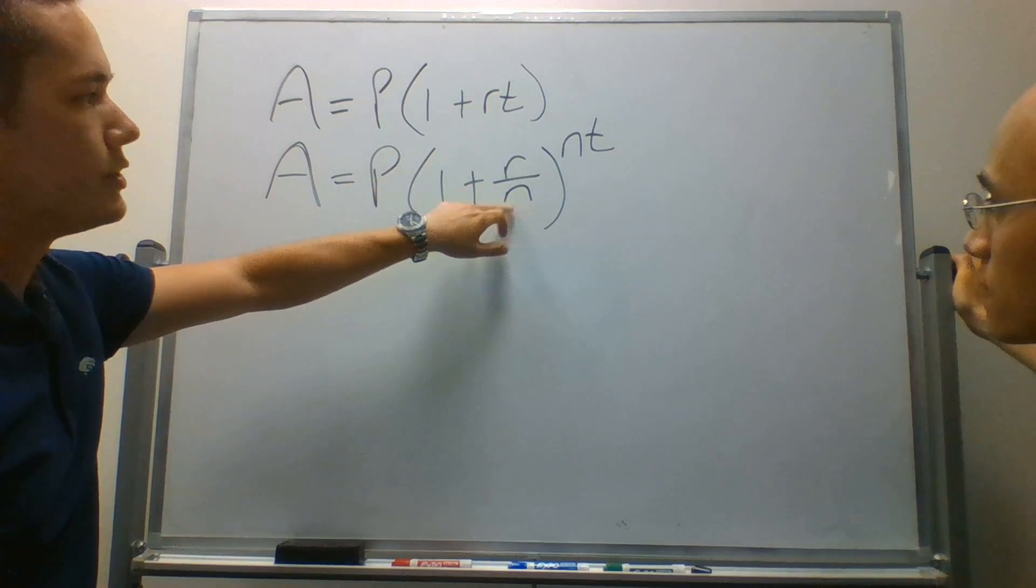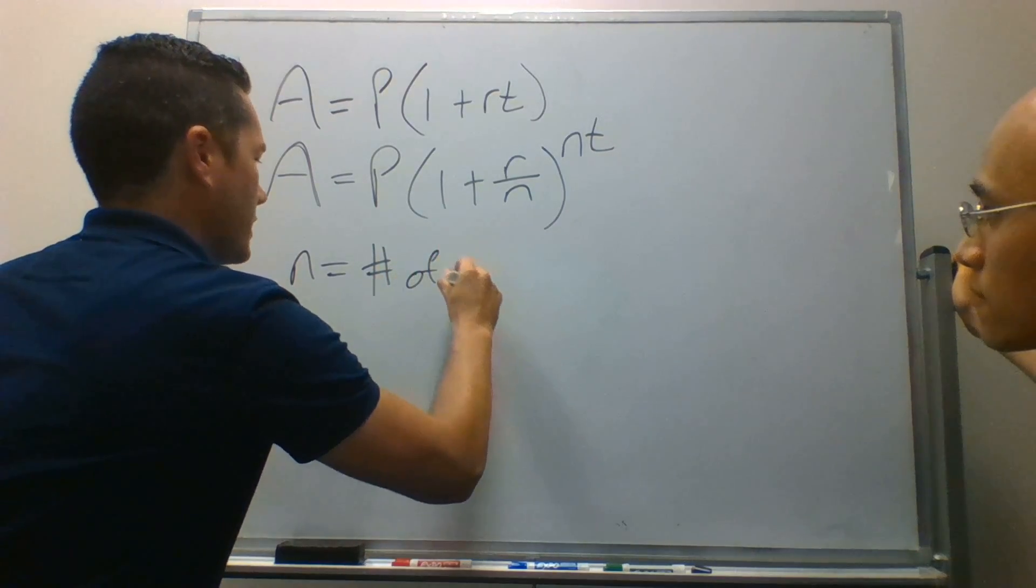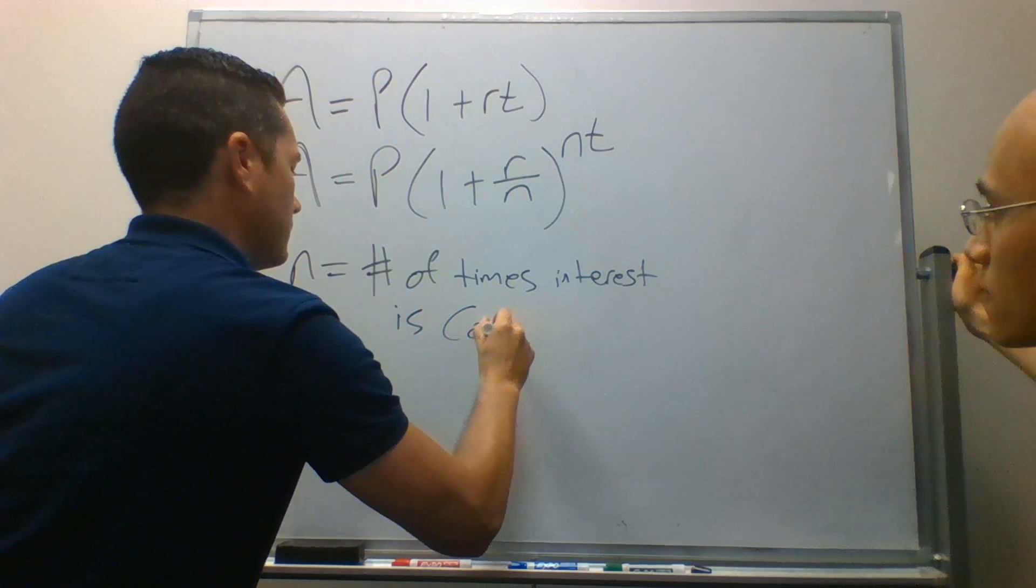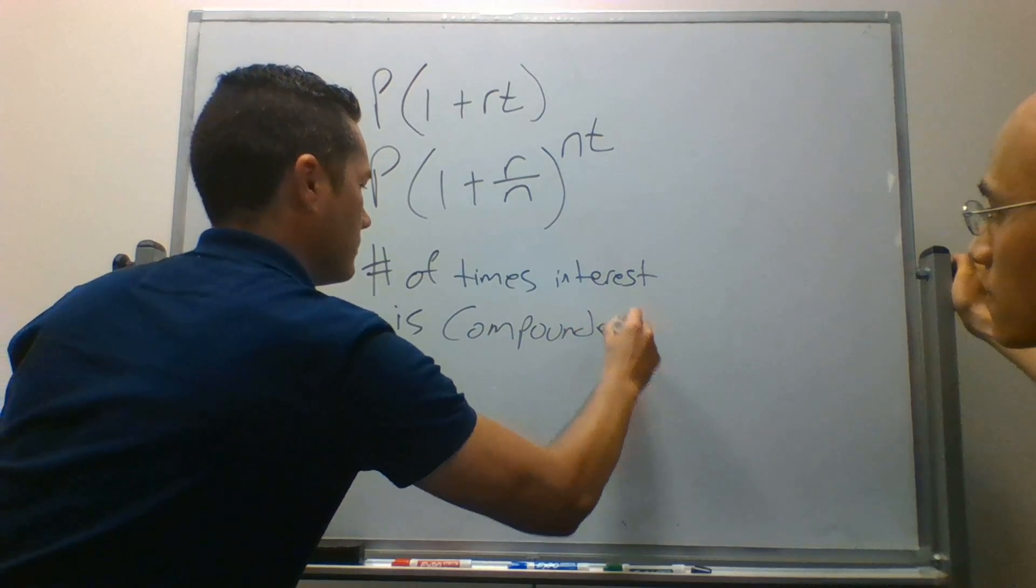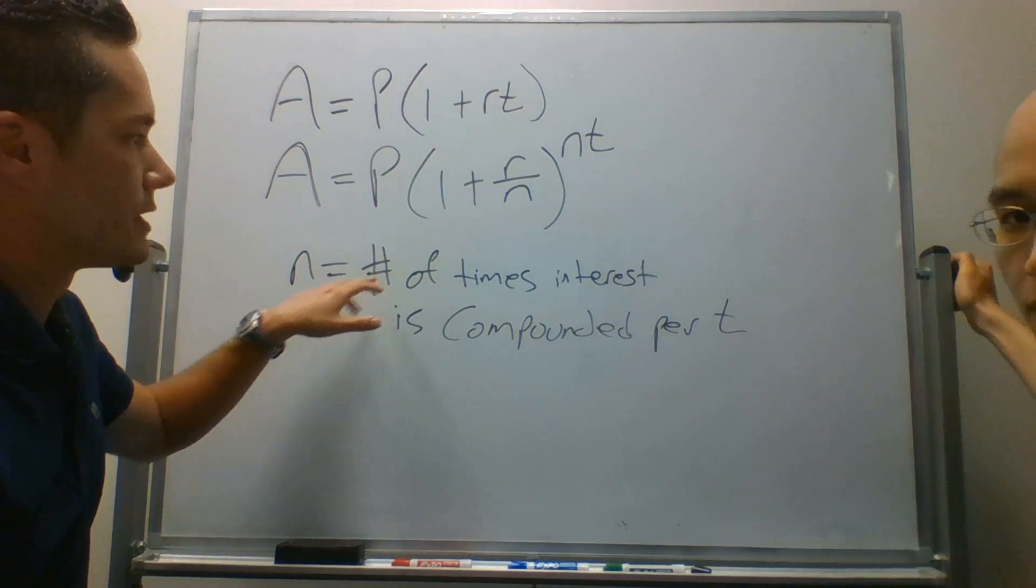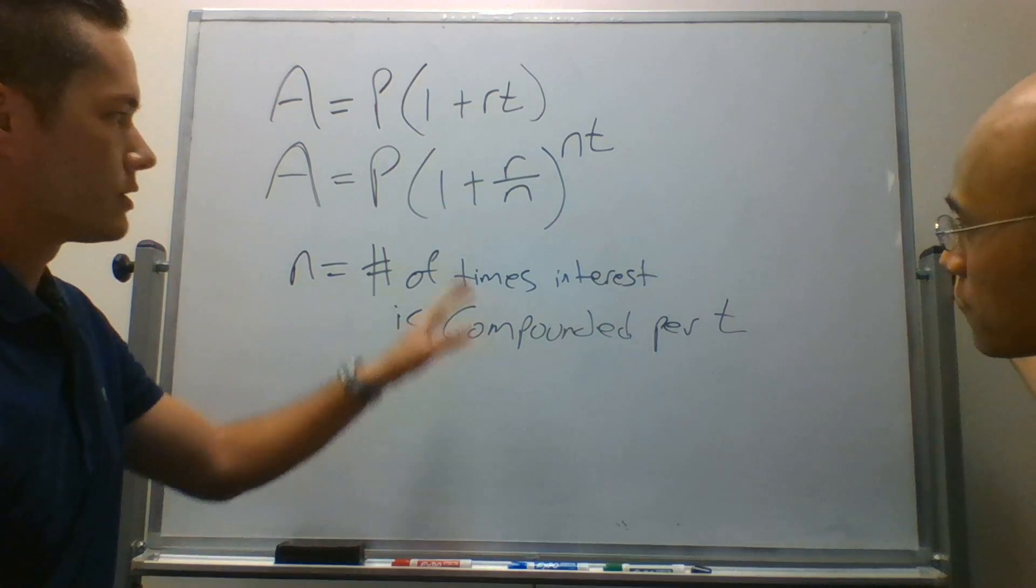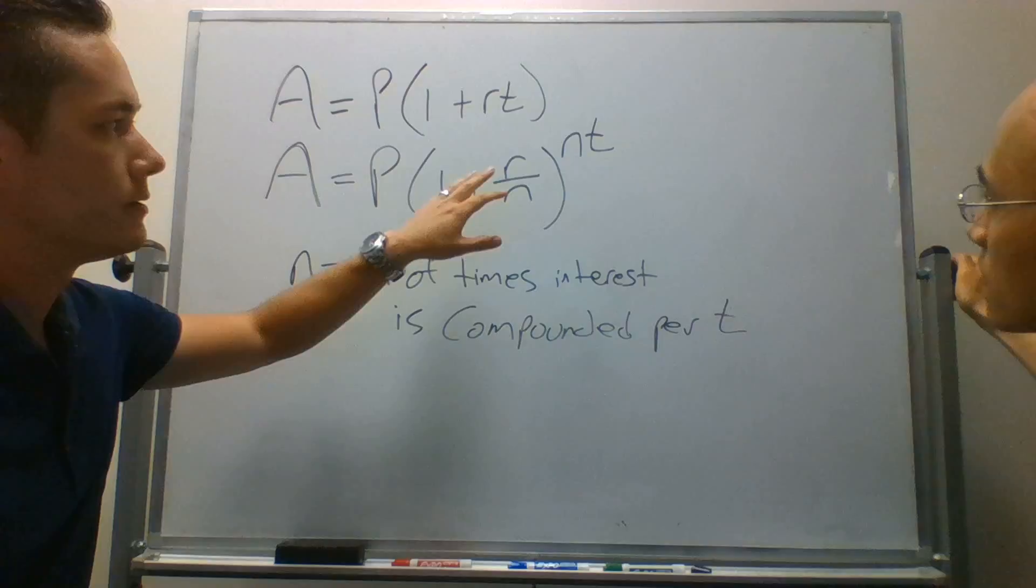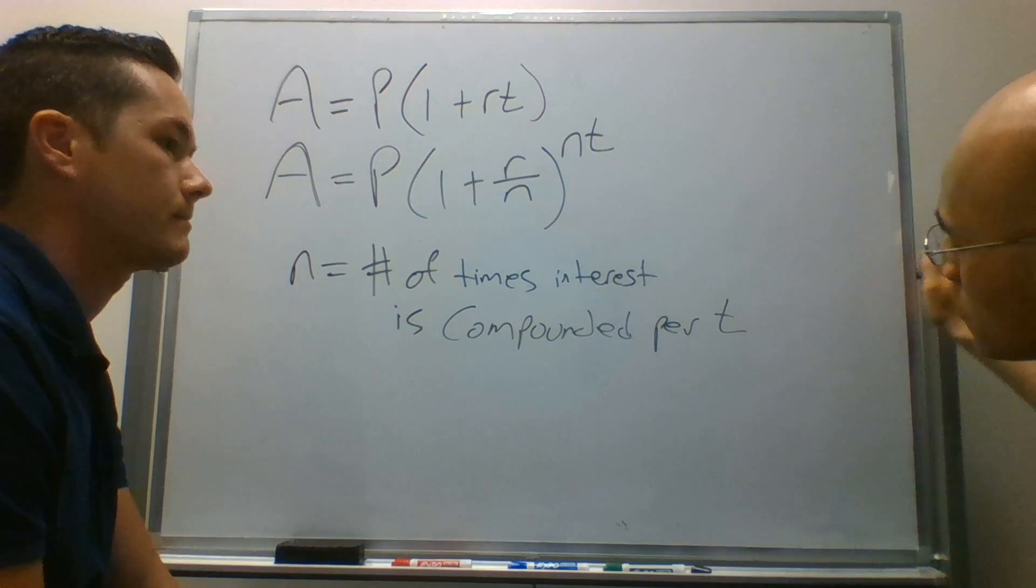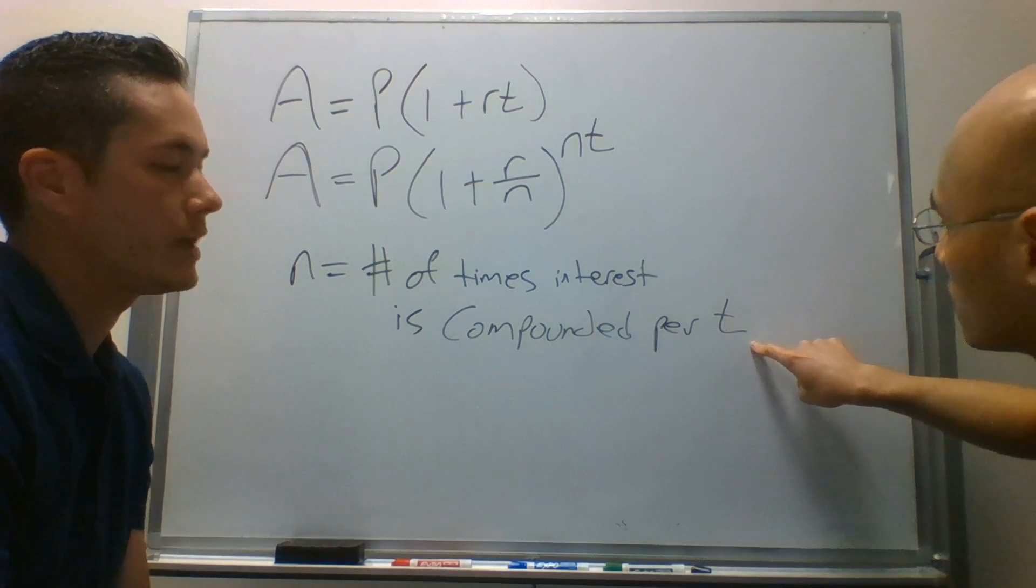T is the same t. So the new one here is n, and n equals the number of times. So n represents the number of times that the interest rate is compounded for the time period of t. For example, if it was compounded once per year, this would just be one. If it was compounded twice per year, two. And it's the number of times that this interest is compounded per time period.